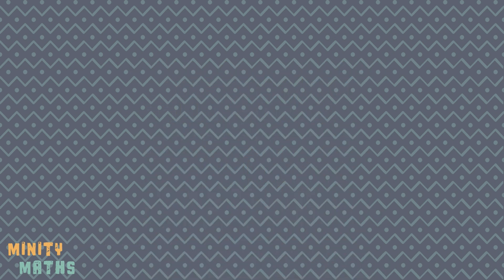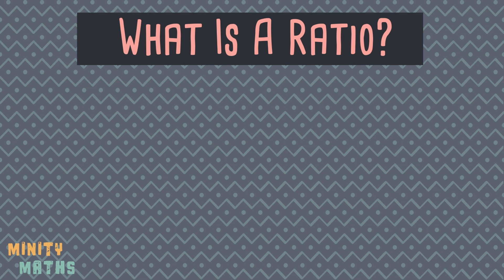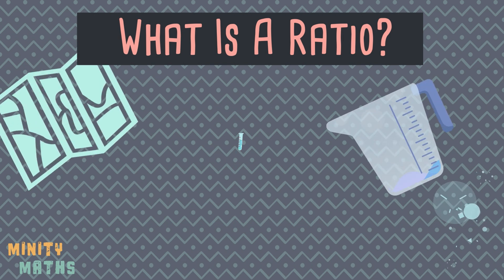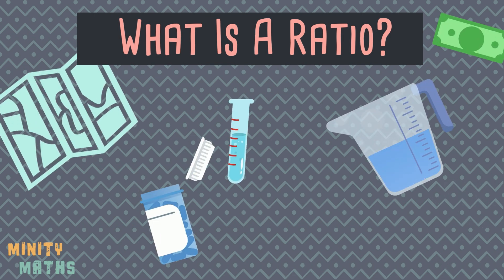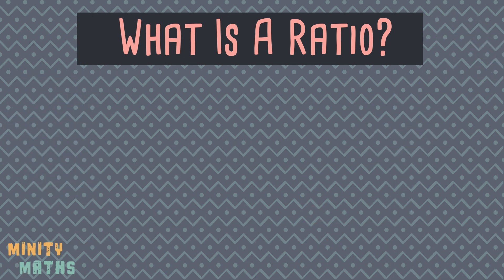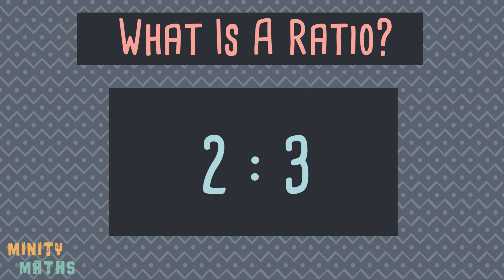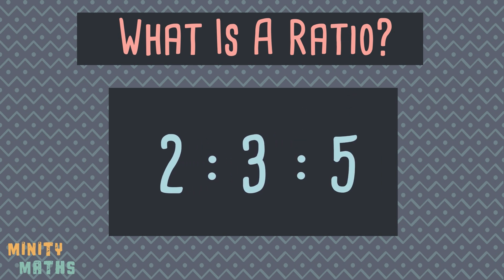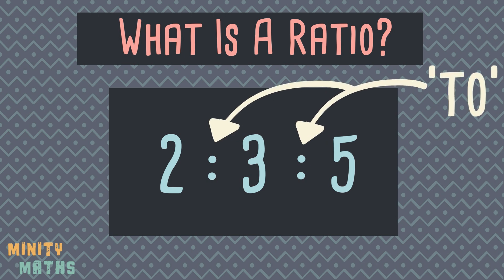So what is a ratio? Ratios are used to show how amounts are shared and compared to each other. Ratios are used frequently in everyday life. They are written with a colon and can also contain more than two numbers. We read the colon as 'to' — for example, 2 to 3 to 5.